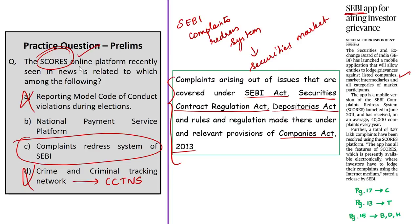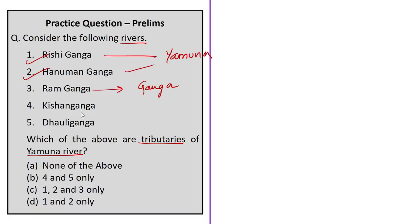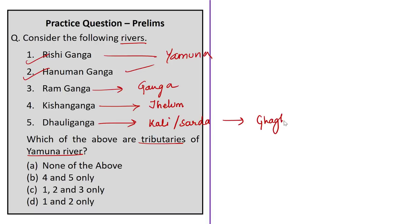Now discussing the questions displayed during the news article session. The first asks which of five rivers — Rishi Ganga, Hanuman Ganga, Ram Ganga, Kishan Ganga, Dauli Ganga — are tributaries of Yamuna. Rishi Ganga and Hanuman Ganga are tributaries of Yamuna. Ram Ganga is a left bank tributary of Ganga. Kishan Ganga is a tributary of the Jhelum River. Dauli Ganga is a left bank tributary of Kali River (also known as Sharda), which flows into Ghagra, a tributary of Ganga. The correct answer is Option D: 1 and 2 only.